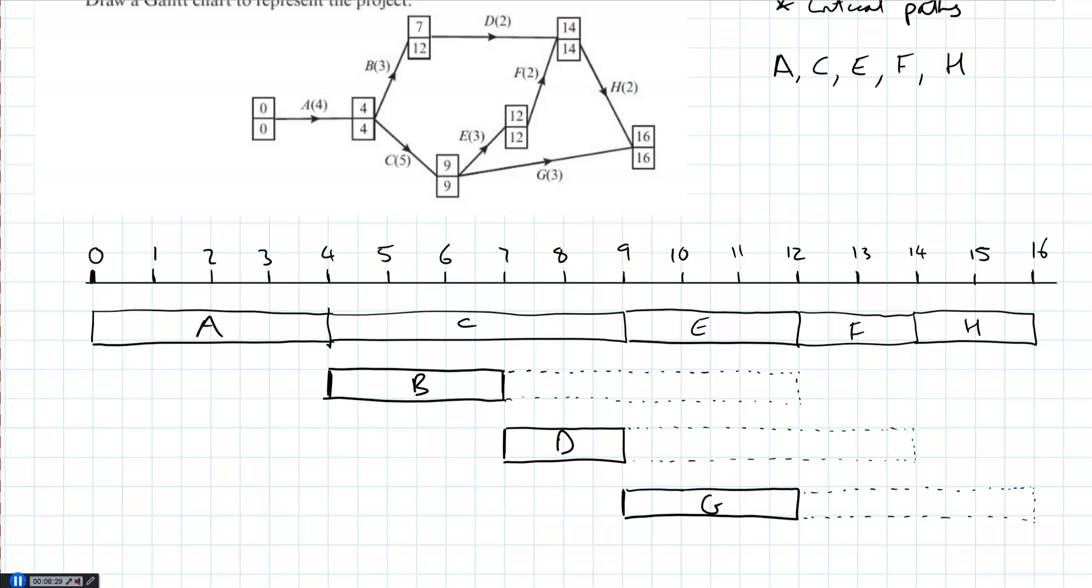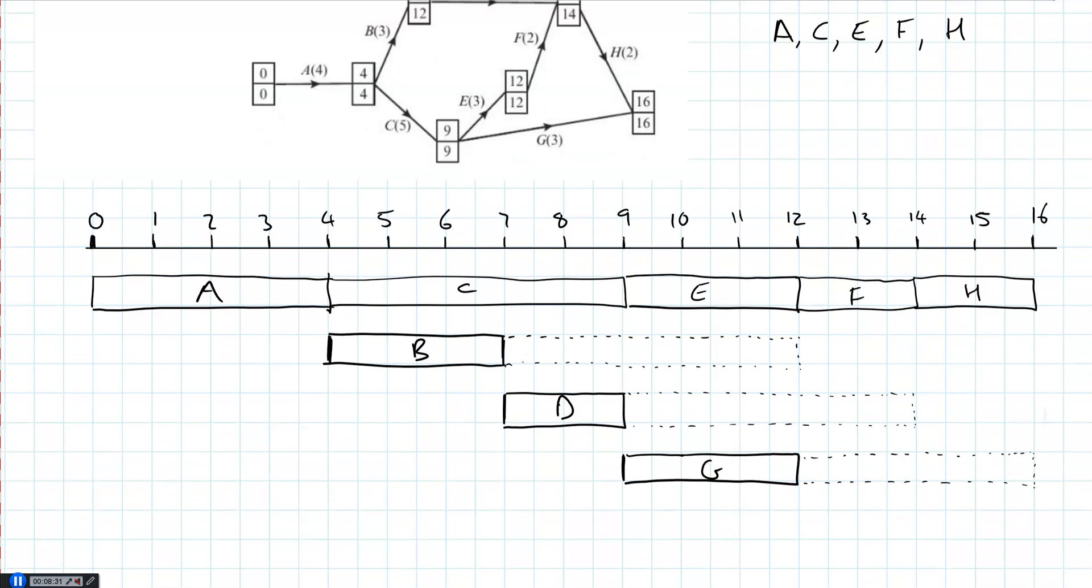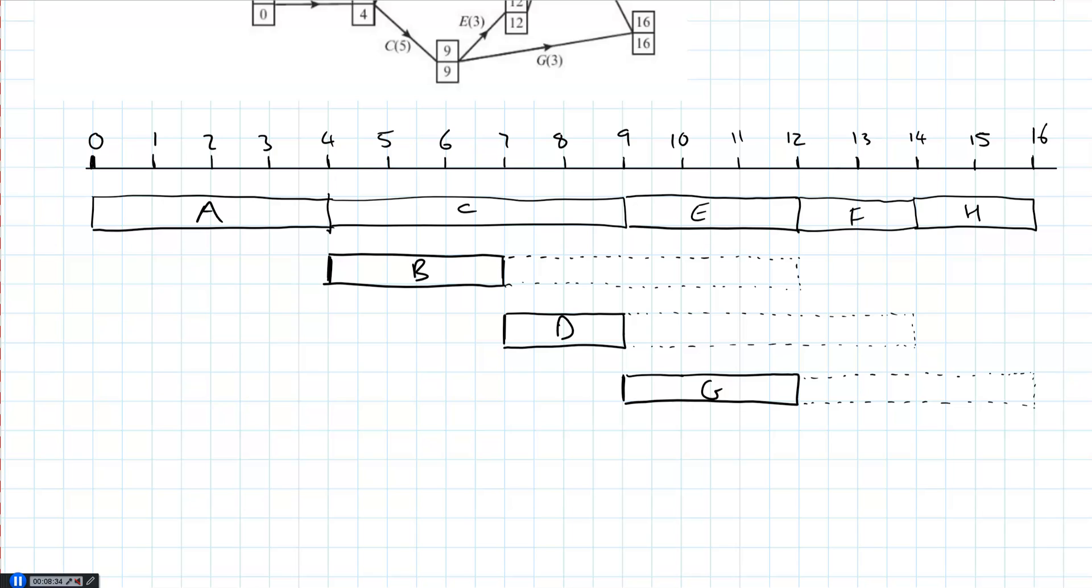That's all the activities. And that's our first Gantt chart or cascade diagram. This whole idea of it cascading downwards like this. That's question 1. So let's have a look at question 2.